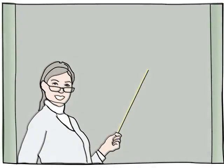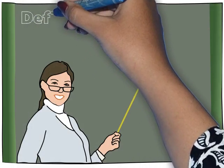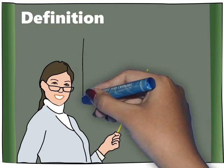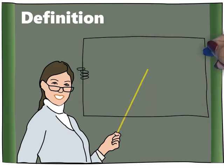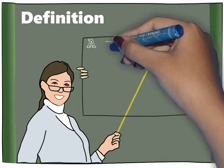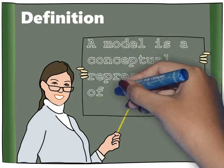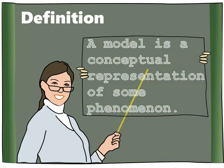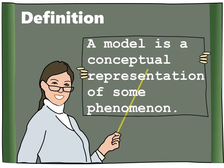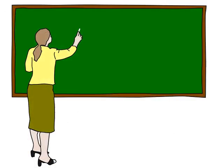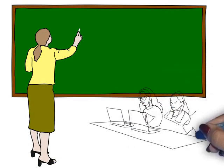Before we start delving into the different communication models, let's first try to understand the definition of a model. A model is basically a conceptual representation of some phenomenon. Here, we'll look into the field of communication and the significance of the different elements in the process of communication.